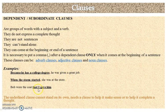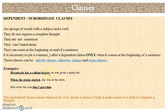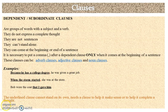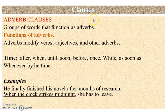These examples have been written following the rules. The rule is: we need a comma after a dependent clause if it comes at the beginning. So we have: 'Because he has a college degree,' comma, 'he was given a great job.' Now let's focus on adverb clauses of time.